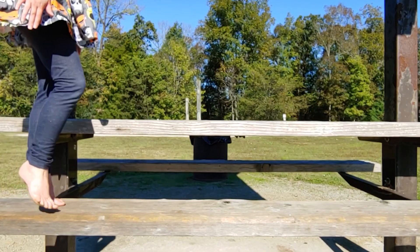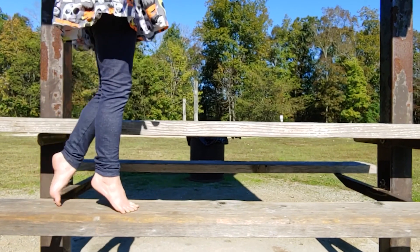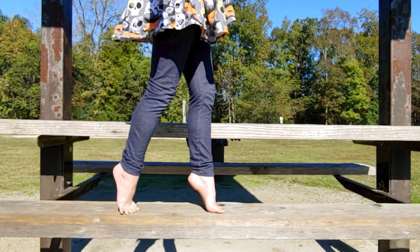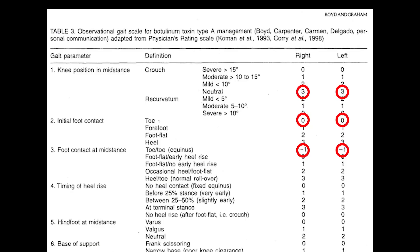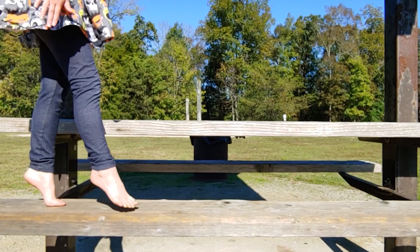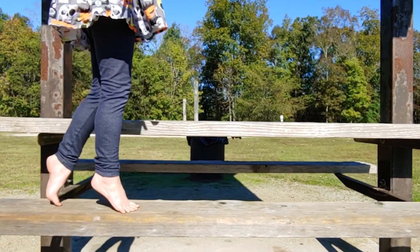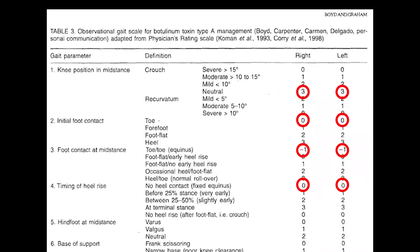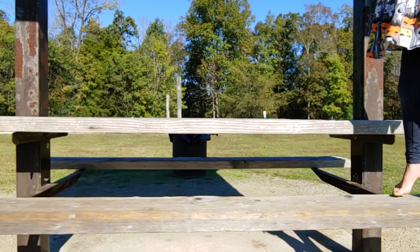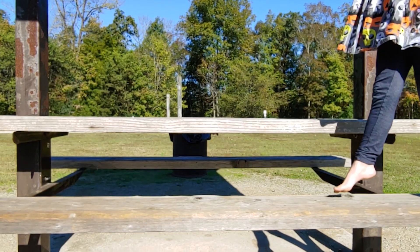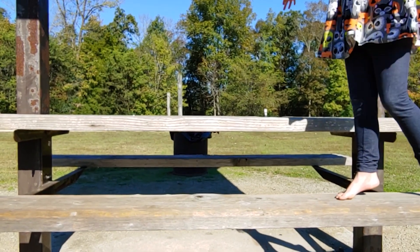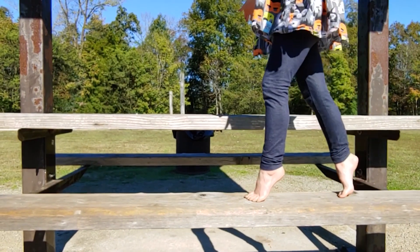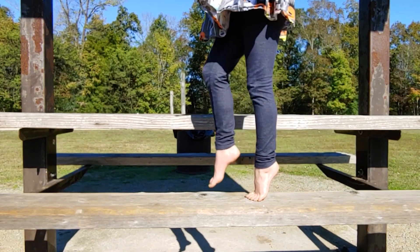The third gait parameter is foot contact at mid stance. Lindsay has just her toe touching, so she actually gets minus one point on both legs. On the fourth parameter, Lindsay shows no heel contact in the timing of her heel rise, so she gets zero points on her right and her left leg. The next item — hind foot at mid stance — is fairly difficult to score because her foot's not fully down to see how her foot is relative to the floor. We're going to score it neutral.